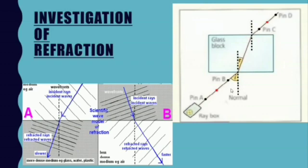If the light ray is at a non-zero angle to the normal, it bends towards the normal when travelling from air to glass — the angle of refraction is smaller than the angle of incidence. Conversely, when travelling from glass into air, the ray bends away from the normal and the angle of refraction is greater than the angle of incidence.